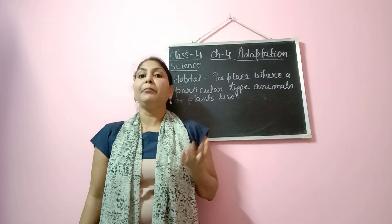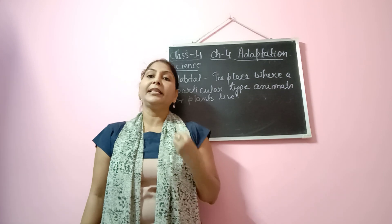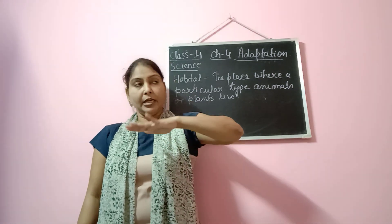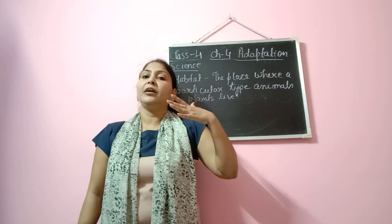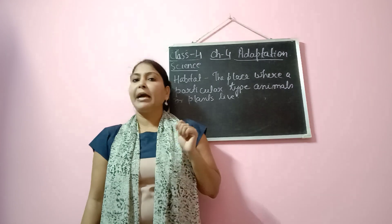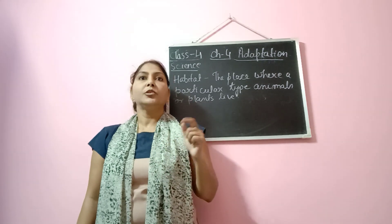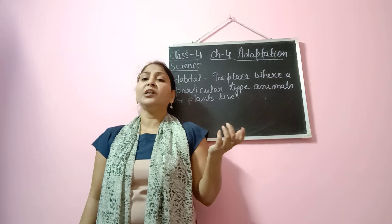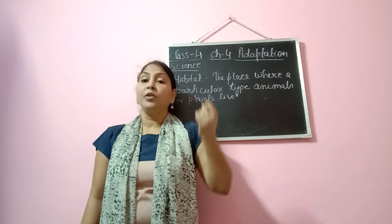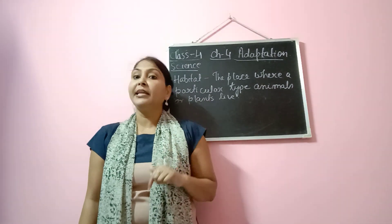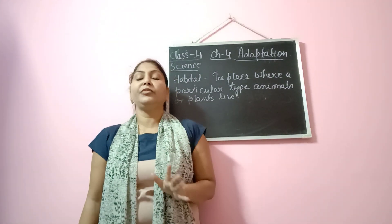Now in order to survive in this habitat, these animals and plants need to adapt certain features and characteristics in them so that they can live in their habitat without any difficulty. Like if we talk about camels — they are desert-living animals. So in order to live in the desert they need to adapt certain features, and if they don't adapt those features they may not survive, they may die or even become extinct after a certain period of time.